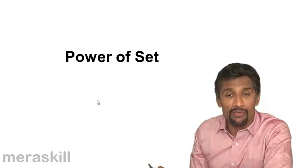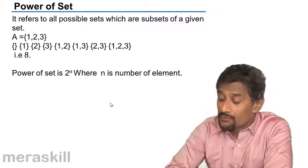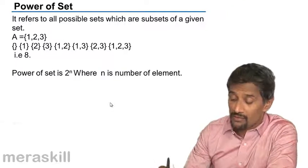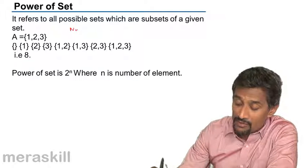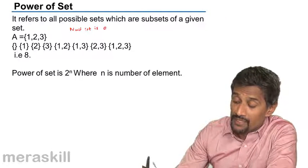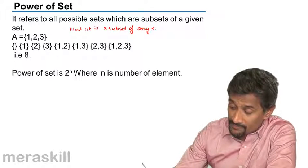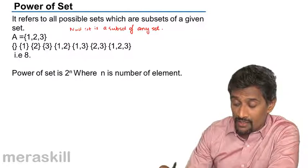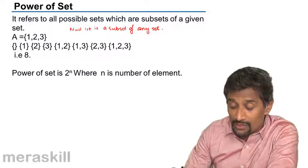Now we have the concept of the power of a set. It refers to all possible sets which are subsets of the given set. For example, for the set {1, 2, 3}, we list all its subsets. It includes the null set — remember, the null set is a subset of any set. Then we have {1}, {2}, {3}, {1,2}, {1,3}, {2,3}, and note that writing {2,1} is the same as {1,2}.